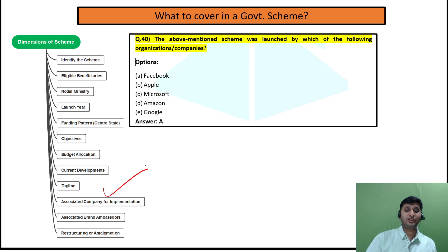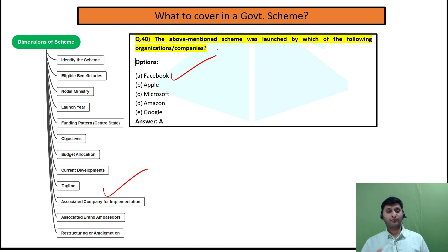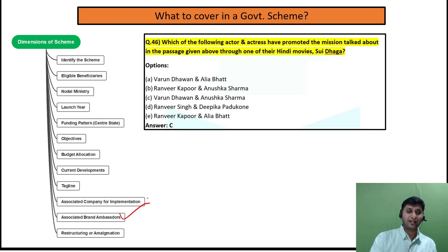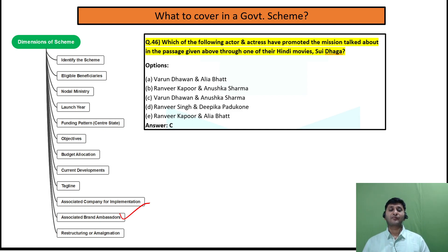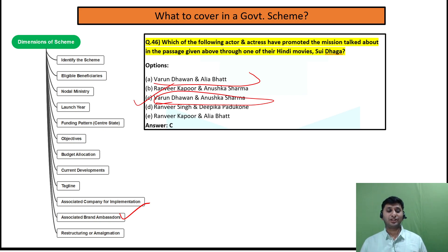Then, associated companies or brand ambassadors are also asked. For example, there was a GOAL scheme which was implemented in collaboration with Facebook, and the exam question asked which organization will help implement this scheme. Associated people as brand ambassadors are also important — for example, a question asked which actors promoted the Skill India Mission in the film Sui Dhaaga, and the answer was Varun Dhawan and Anushka Sharma.